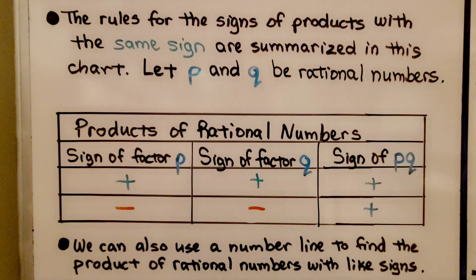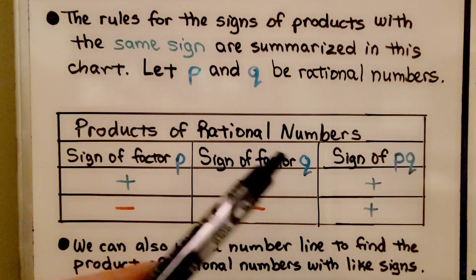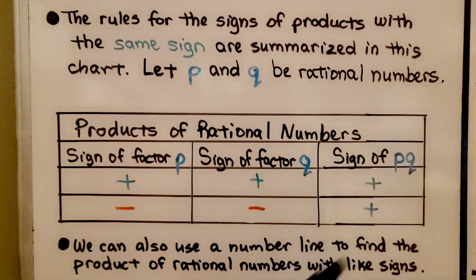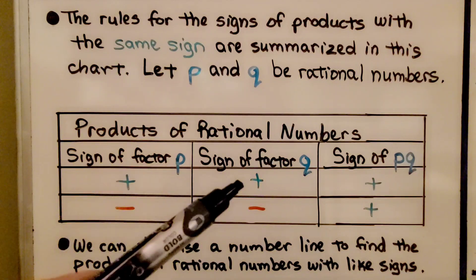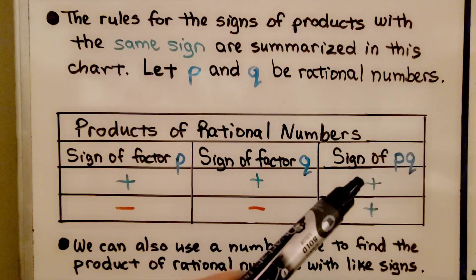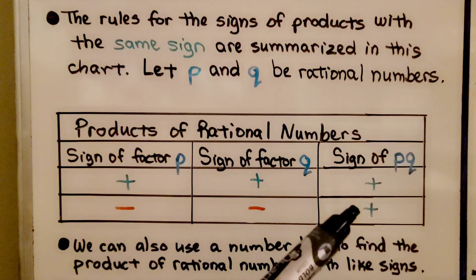The rules for the signs of products with the same sign are summarized in this chart. We're going to let p and q be rational numbers. Here is the sign of factor p and the sign of factor q, and this is going to be the sign of p times q. If we've got a positive and a positive, then p times q will be positive. If we have a negative and a negative, it will be positive.